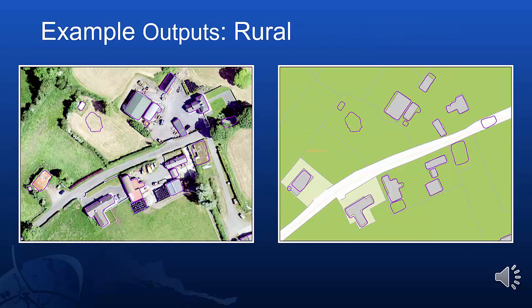These images show how the models performed in typical rural areas. There are still some false positives, primarily because there is a lot of bare earth in this area. Also, silage bales have also maybe been picked up as a building. Thank you for your time. Both Eamonn and I will be available for questions later on.